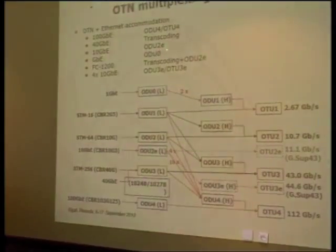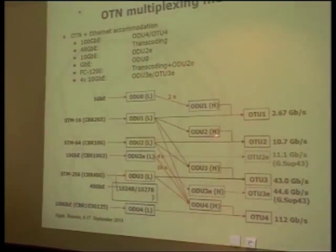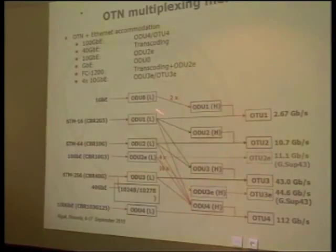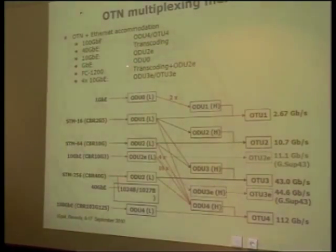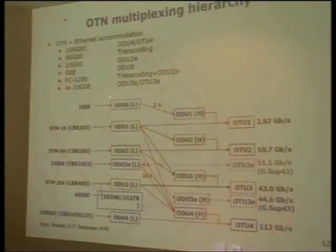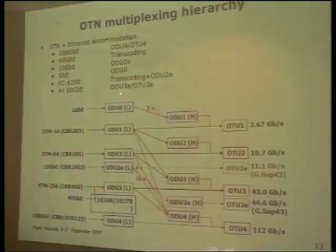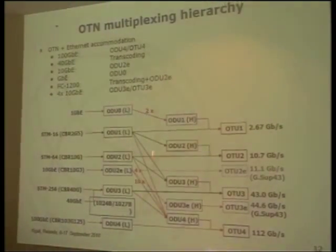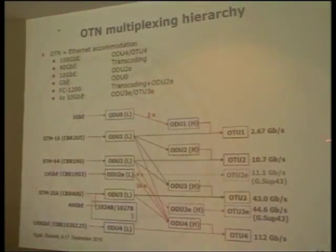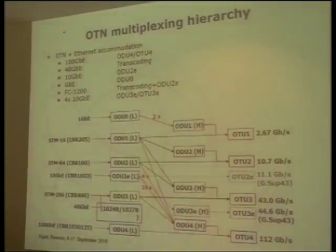This is the number of client kinds. 100G Ethernet will be put in ODU4. 40G after transcoding goes into ODU3. For 10G, ODU2E means an extension size container. ODU2E — E means extension. For 10G Ethernet, it should be ODU3E. The size is slightly larger than the normal ODU size because normal ODU was created to accommodate SDH signals.